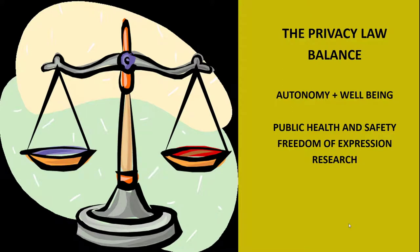So what does privacy law protect? At bottom, privacy law tries to protect individual autonomy and well-being in two ways: by giving people a measure of control over data that relate to them, and by prohibiting and punishing certain actions others take regarding those data that society considers harmful. Privacy law must balance these considerations with the fact that data are rarely wholly ours — others have legitimate relationships with those data, too.